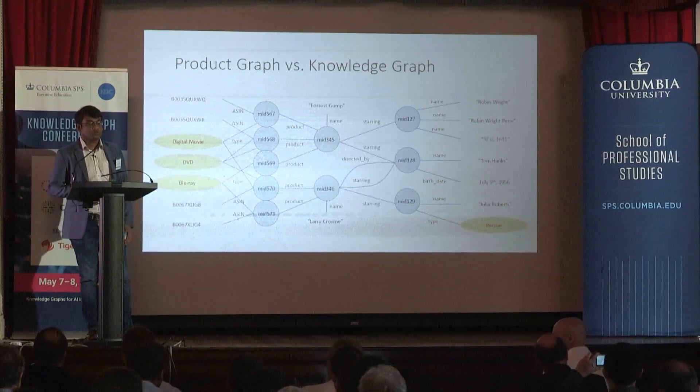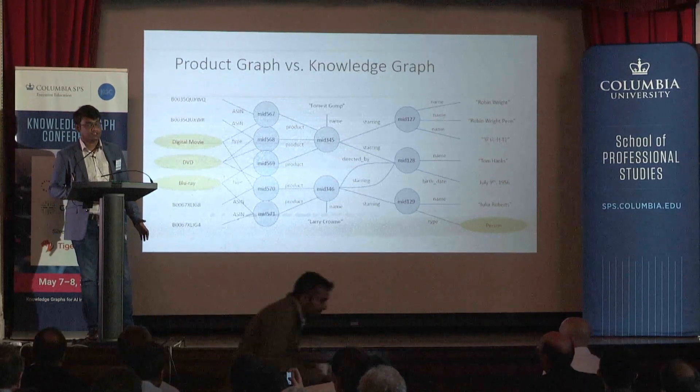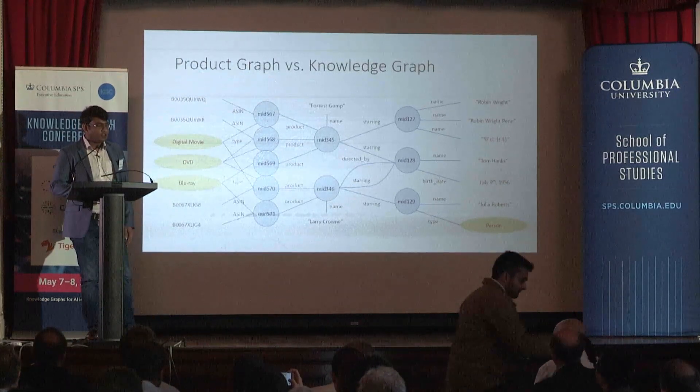You may ask whether a product graph is a subset of the knowledge graph or vice versa. The reality is there is a fair amount of overlap between the two in terms of common themes like movies, music, and books. A generic knowledge graph would mostly model named entities like location, relation, organization, and persons. On the other hand, the product graph models all the entities that you may want to consume or buy on Amazon, like consumer electronics, groceries, dresses, and so on — in general, a far bigger set.